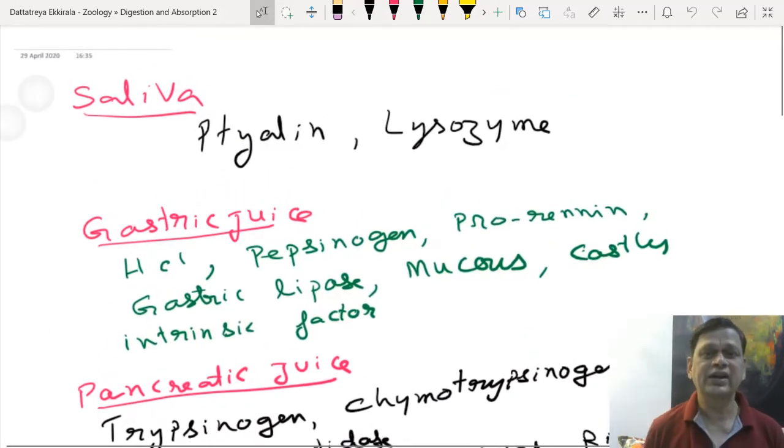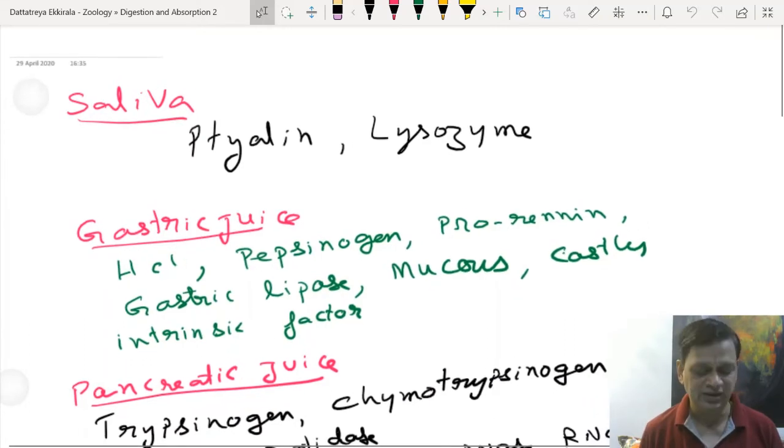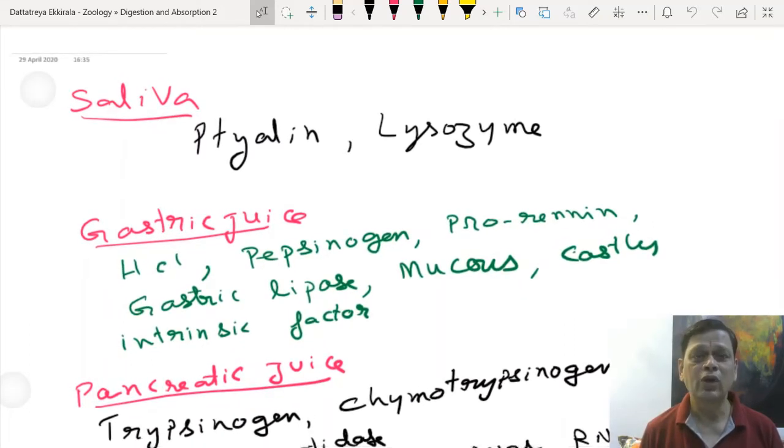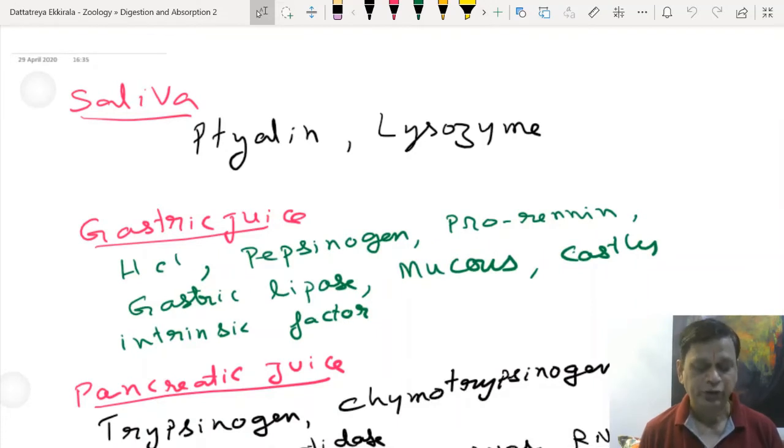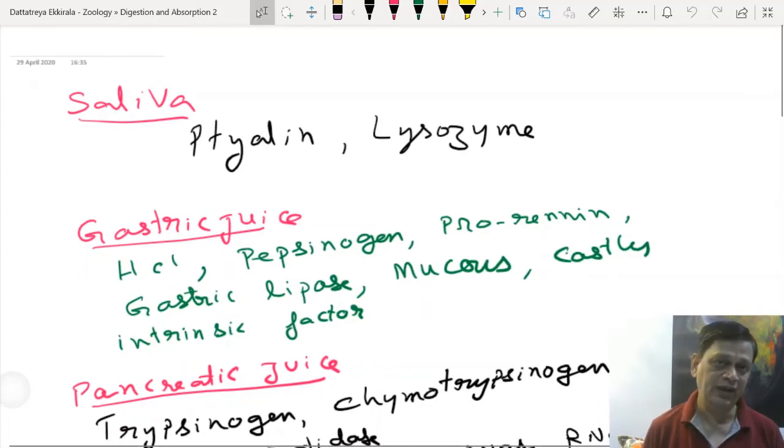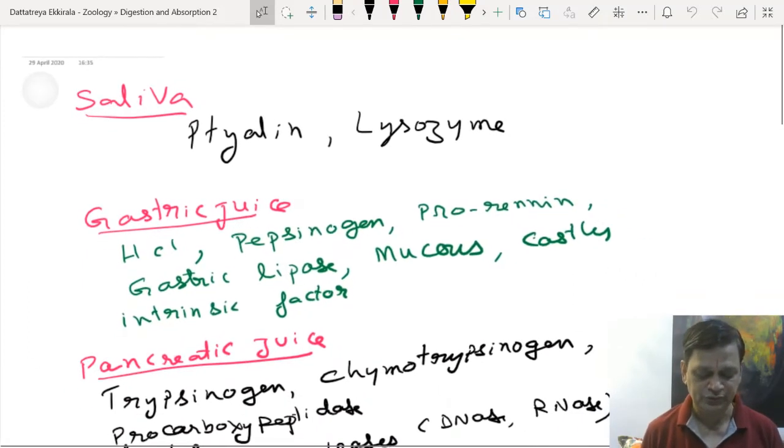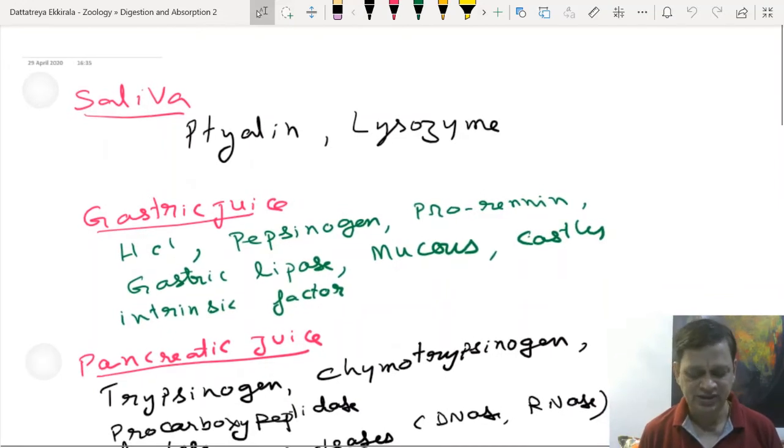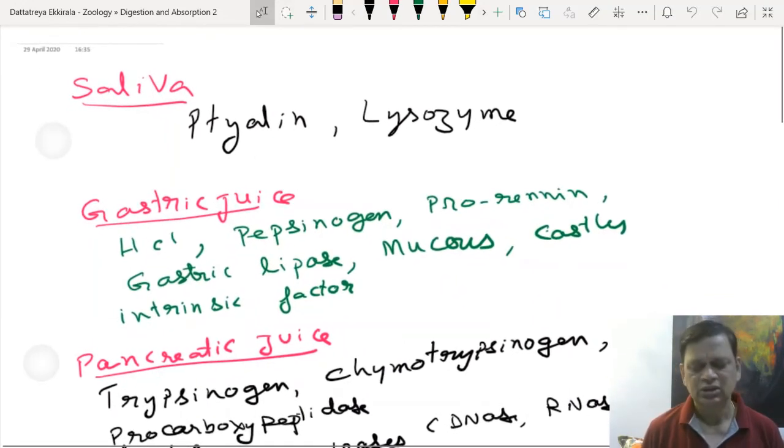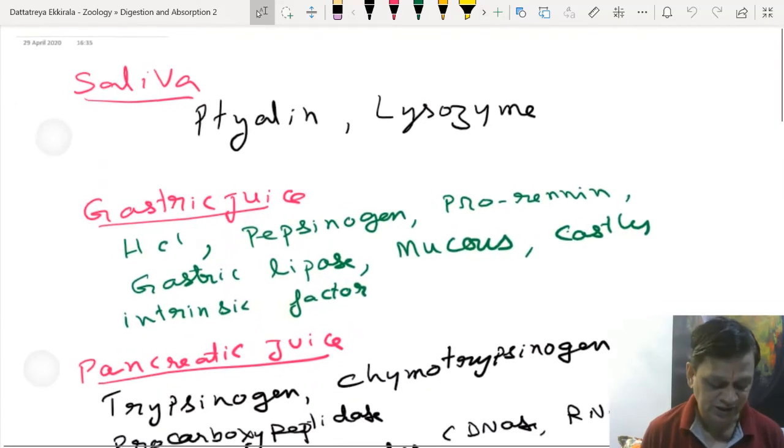Saliva contains thialine, which is salivary amylase, helping in digestion of polysaccharides. Polysaccharides can be digested by amylase present in saliva and pancreatic juice. An antibacterial enzyme called lysozyme and antibodies IgA can also be seen.